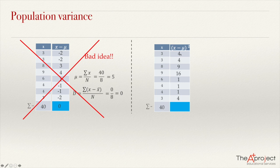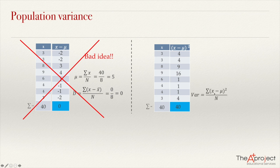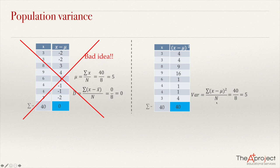Now that we have all the deviations squared, we add them together: 4 + 4 + 9 + 16 + 1 + 1 + 1 + 4 = 40. It's a coincidence that the sum is also 40. The variance is the average of all these squared deviations — the sum of squared deviations divided by the total number of values. In this case, it will be 40 over 8, which is 5. It's a coincidence here that the variance and the mean are the same — that could happen, but not frequently.